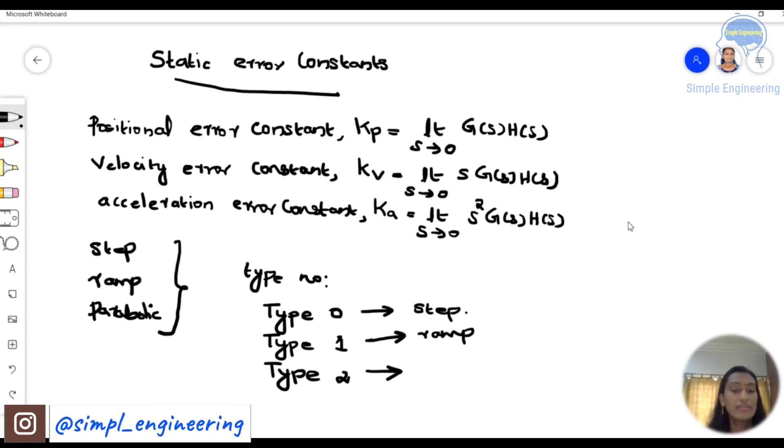And type 2 means we have a constant steady state error when the input is parabolic. So that comes under type 2 category.